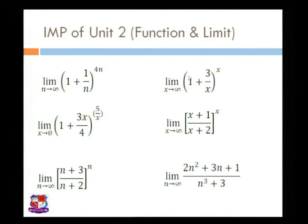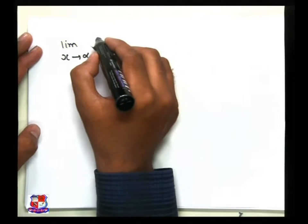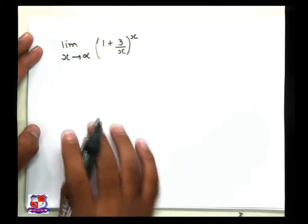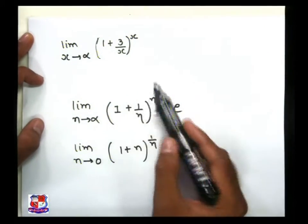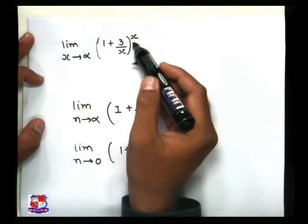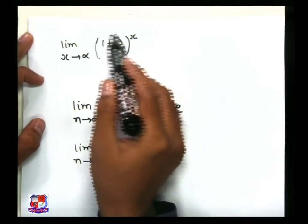The next question is: limit as x tends to infinity of (1 + 3/x)^x. Comparing with our base formula — x tends to infinity, the inner term is 3/x, but we require the power to be x/3 (the inverse of 3/x) to directly apply the formula. So we need to adjust the power.